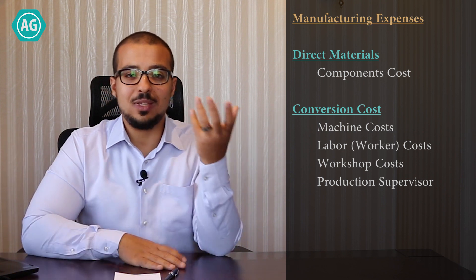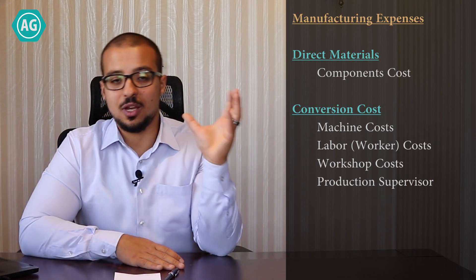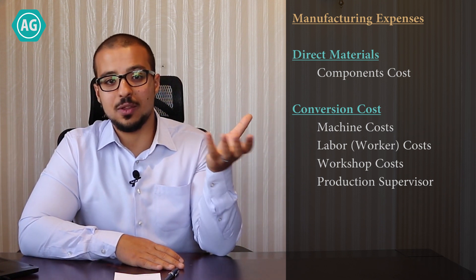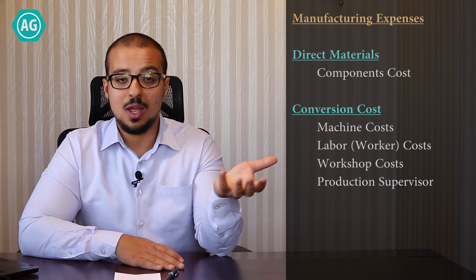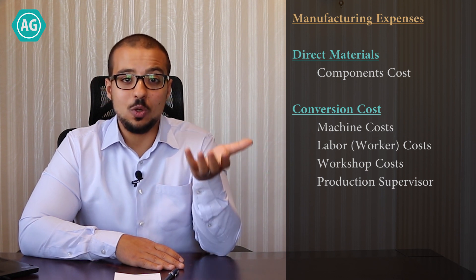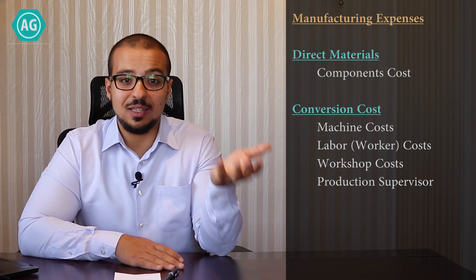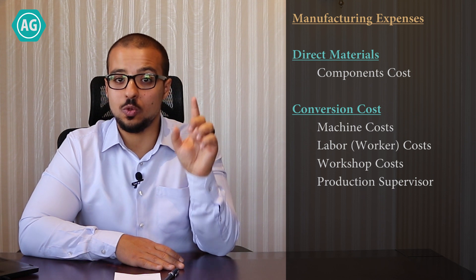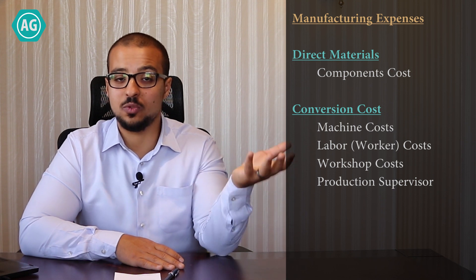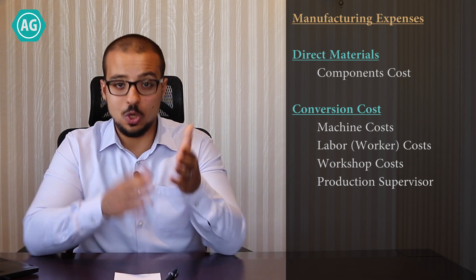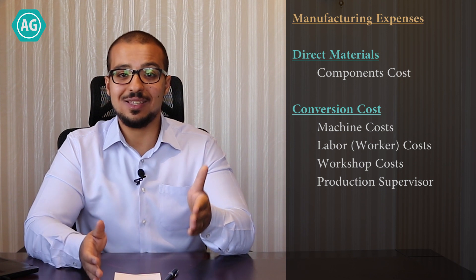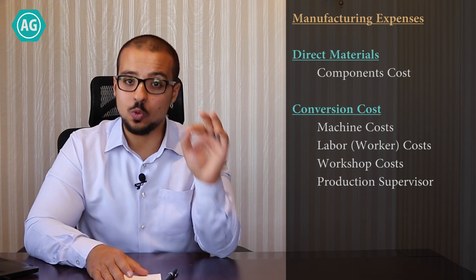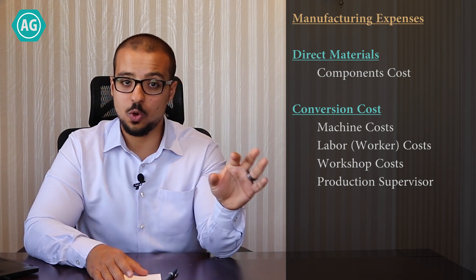So what exactly are direct materials? Direct materials are the main components that we use in our production. When you look at your product, you can easily tell how much you consumed in terms of direct material. For example, when you look at a chair, you can easily say that this chair consumed two square meters of wood and 10 nails.